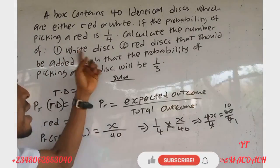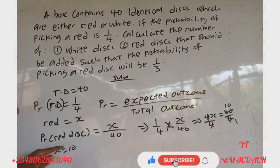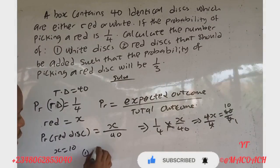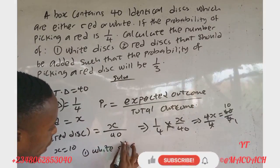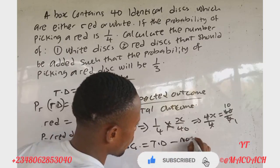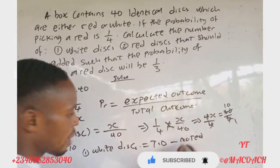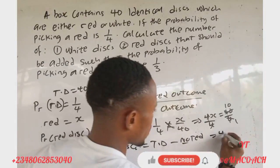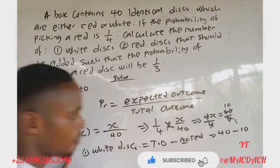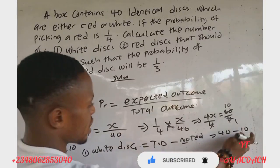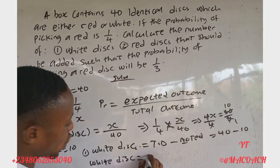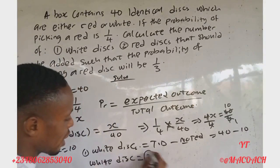Now to get the total number of white disks, we subtract the number of red disks from the total number of disks. So: white disks = total disks − red disks = 40 − 10 = 30. Therefore, the number of white disks is 30.